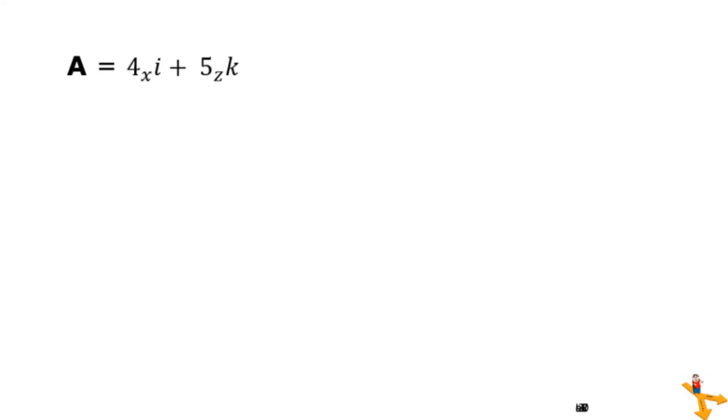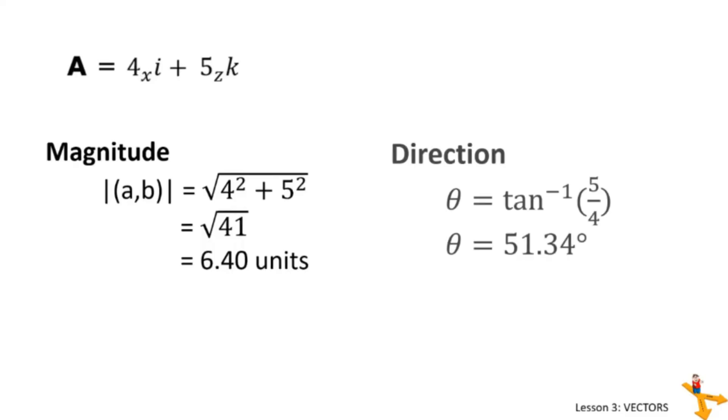Let us try computing for the magnitude and direction of vector A. As you may have observed, the magnitude is calculated just like the Pythagorean theorem. Substituting the values, we get magnitude of vector A is 6.4 units. For its direction, simply get the arctan of 5 over 4. We get theta as 51.34 degrees.